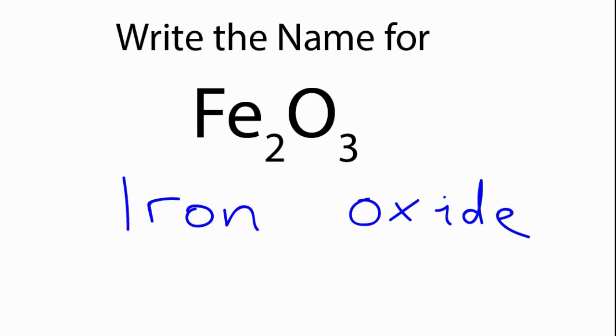That gives us iron oxide. But since Fe is a transition metal, we need to write the charge right here in the middle, and we'll do that with Roman numerals.